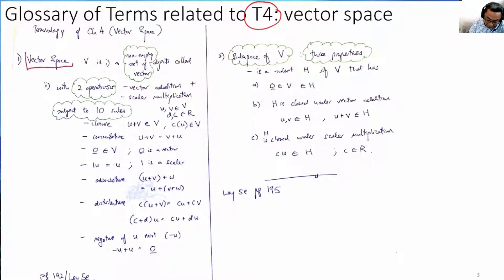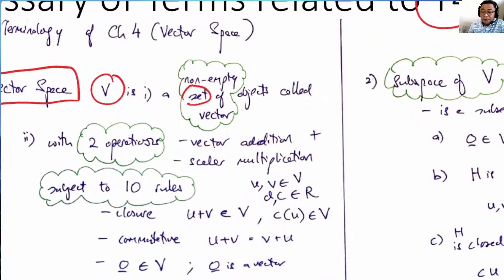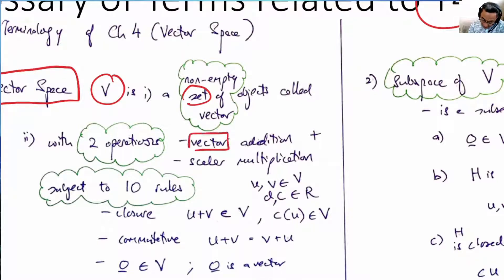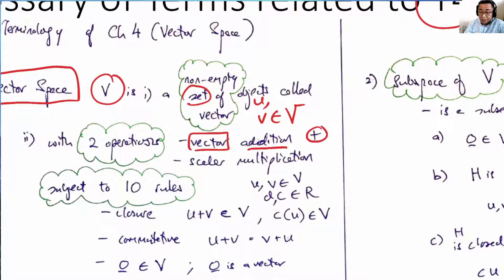What is a vector space? A vector space V is a non-empty set of vectors — we call these objects vectors. This set of vectors is supported by two operations. Vector addition means that if U and V belong to the vector space V, we can add them. We have to define the addition for every space.